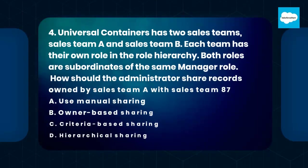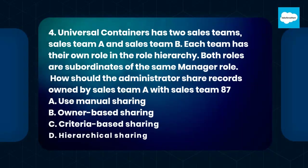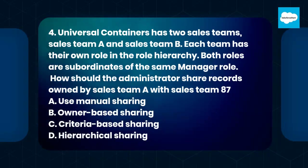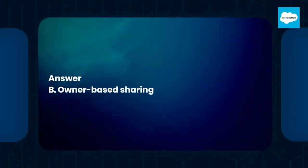Question 4. Universal Containers has two sales teams: Sales Team A and Sales Team B. Each team has their own role in the role hierarchy. Both roles are subordinates of the same manager role. How should the administrator share records owned by Sales Team A with Sales Team B? A. Use manual sharing. B. Owner-based sharing. C. Criteria-based sharing. D. Hierarchical sharing. Answer: B. Owner-based sharing.